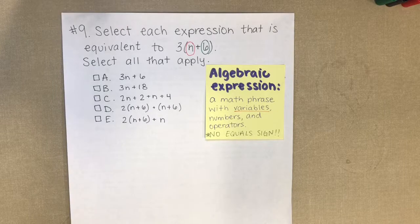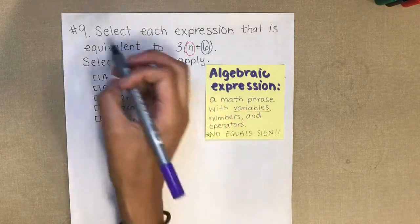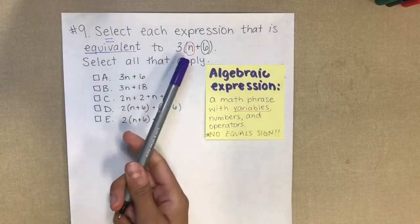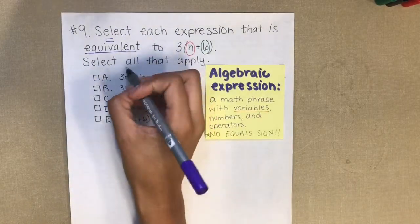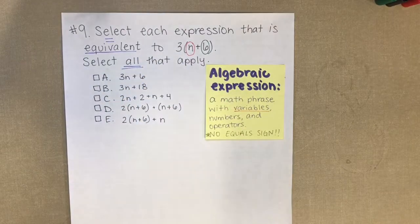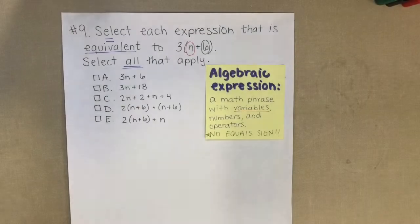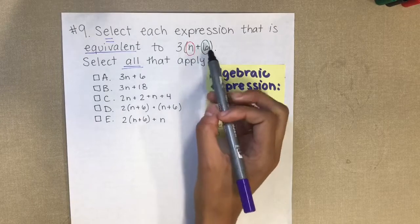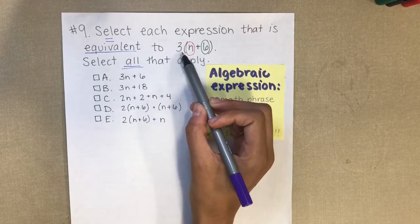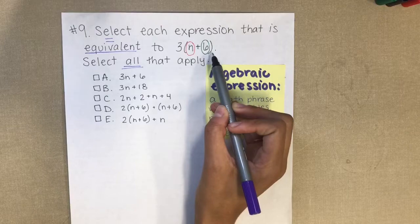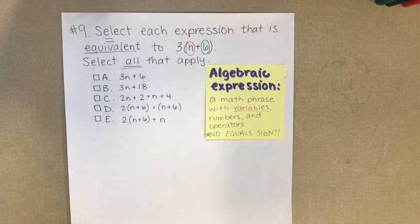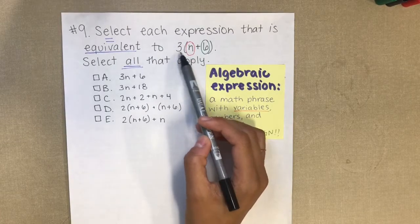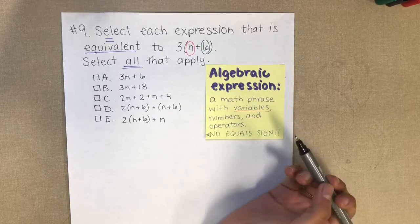So here we go. Select each expression — now we know what that is — that is equivalent, which means it is equal to this expression. Select all that apply; this is a very common problem in PARCC, meaning there might be more than one answer. The first thing I'm going to do is figure out what this expression is equal to, so I want to expand it out.